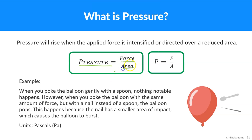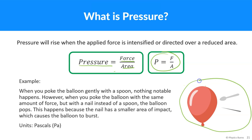divided by area. We can see this with an example: if we push on a balloon with a spoon and then push it with the same force using a needle, the needle is going to pop it because it applies a lot more pressure. The reason is that the area the needle applies pressure on is super small, and since the area is super small, the pressure is very high.